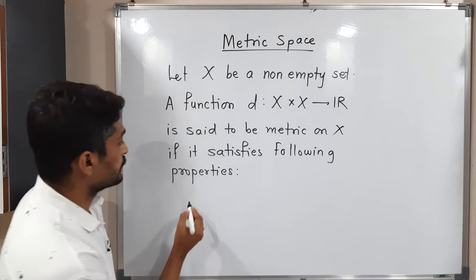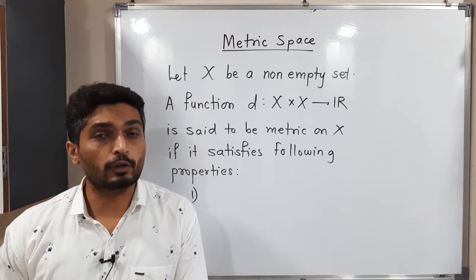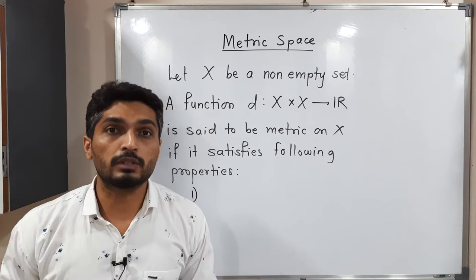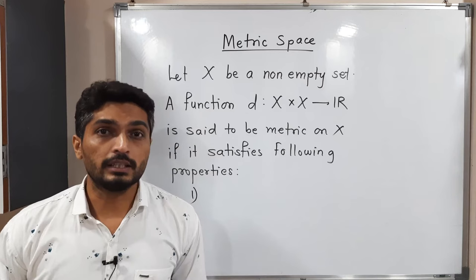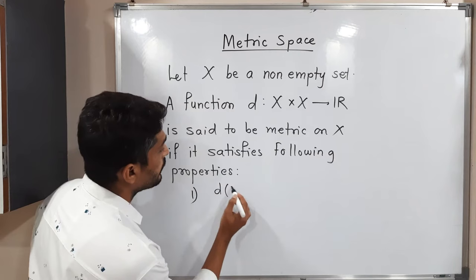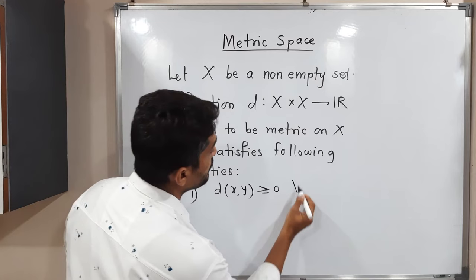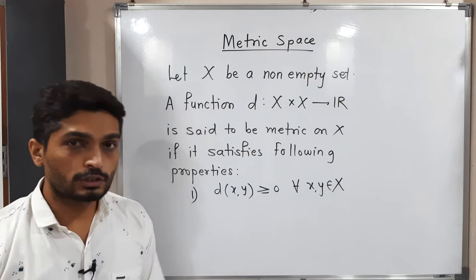The first property is that distance cannot be negative. If you take any two points and count the distance between them, it cannot be negative. For example, if you consider any two cities — Mumbai and Delhi, or Mumbai and Calcutta — the distance cannot be negative. So the first property of D is: distance between any two points is greater than or equal to zero, for all X, Y belonging to X.